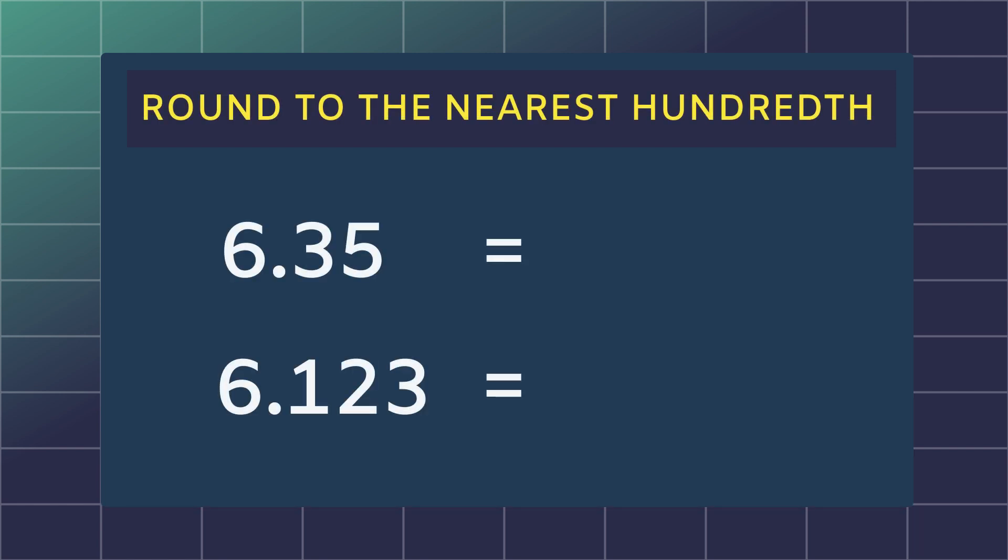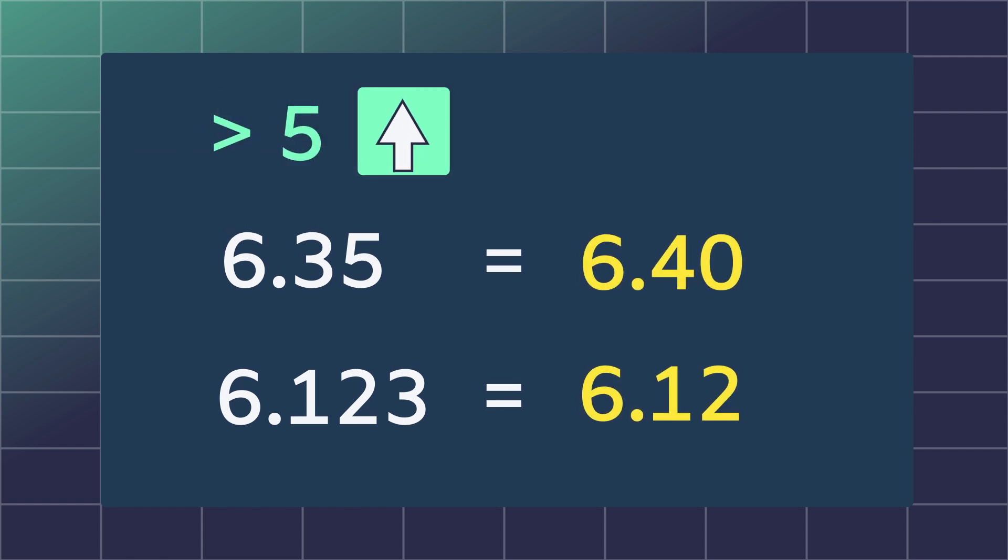For two or three decimal places, apply the same method and remember to look at each place value. More than five, let it rise. Four or less, let it rest.